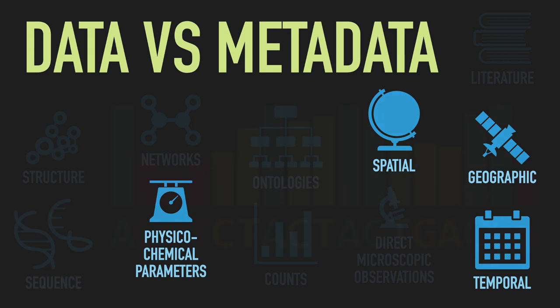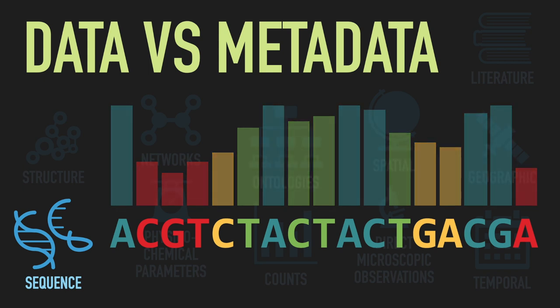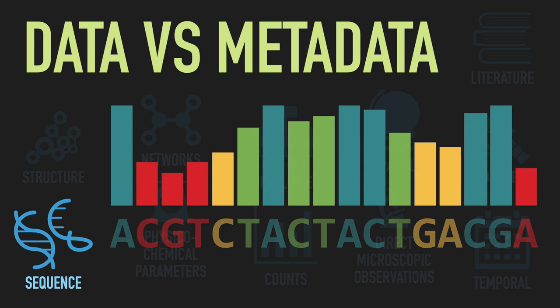Another common example is DNA sequences and sequence quality. Which one is data and which one is metadata? Well, that depends. If my question is what's the sequence of a DNA molecule, then the data is the sequence itself — the quality simply serves as data about my data, to inform me on how confident I can be at every position. However, if my question is about the distribution of sequence quality scores, then my data is the quality. The sequence is important data about my data, perhaps telling me that low-quality scores are more likely in certain nucleotides, but it's not at the core of my question, so I would consider it as metadata.